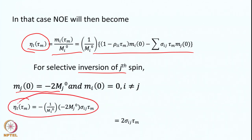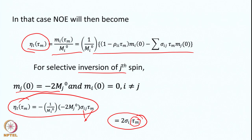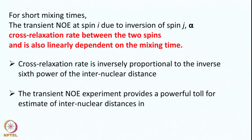The NOE enhancement at any time T_m for selective inversion of spin j is given by eta ≈ (−1/M_i0)(−2 M_j0 sigma_ij T_m), which simplifies to 2 sigma_ij T_m. So the transient NOE enhancement is linearly dependent upon T_m. For short mixing times, the enhancement increases linearly; as T_m increases, the NOE continues to grow — though eventually spin lattice relaxation becomes important. The cross relaxation rate is thus linearly dependent upon mixing time.